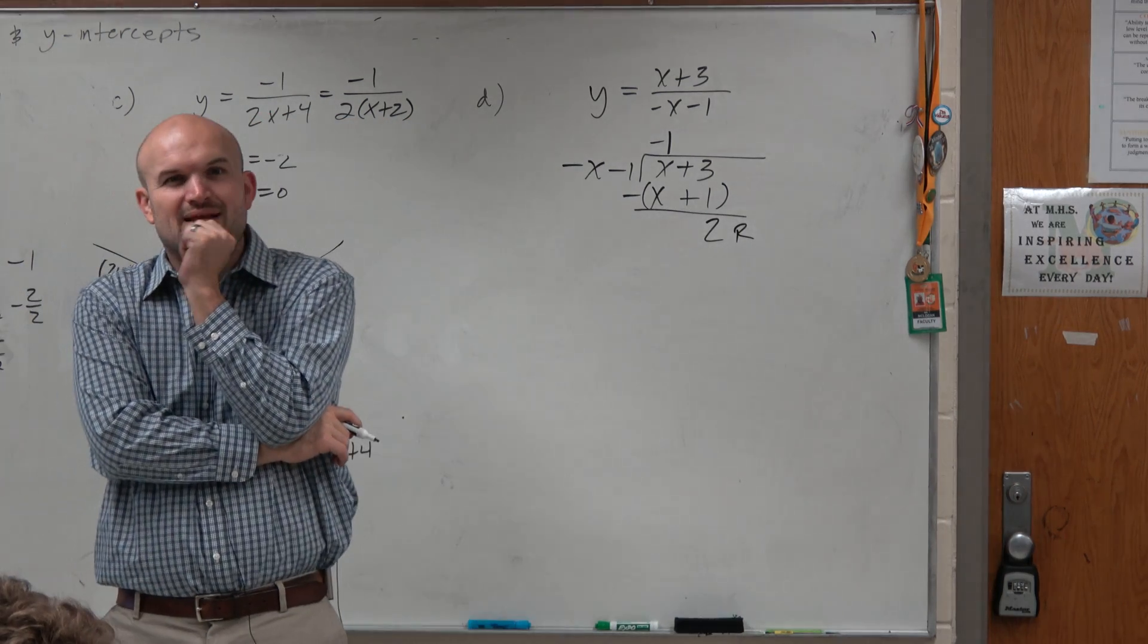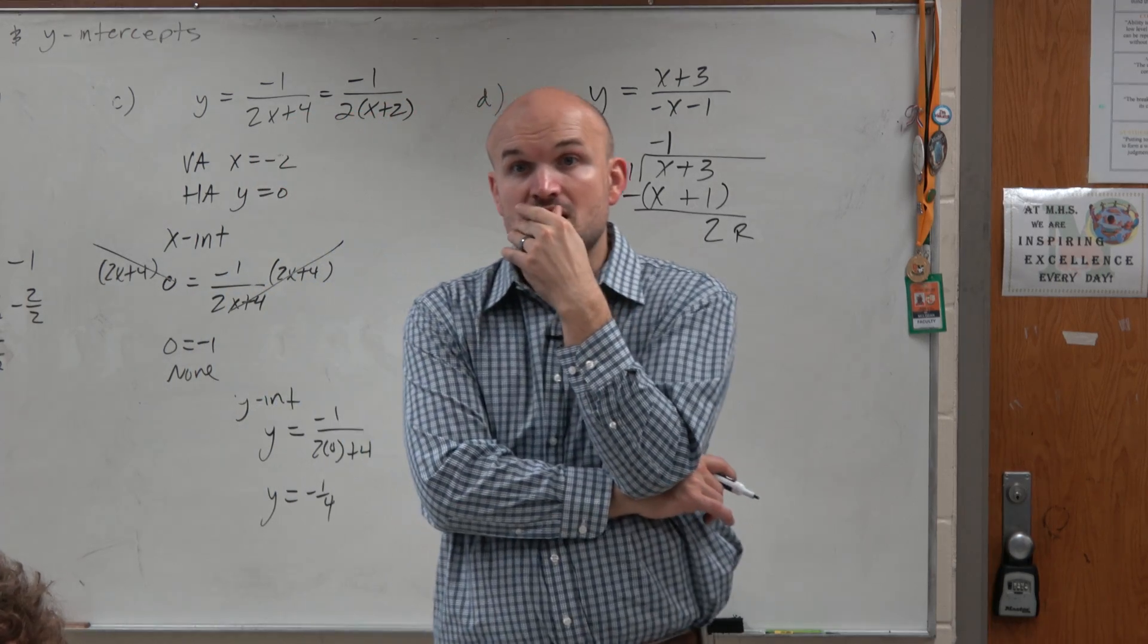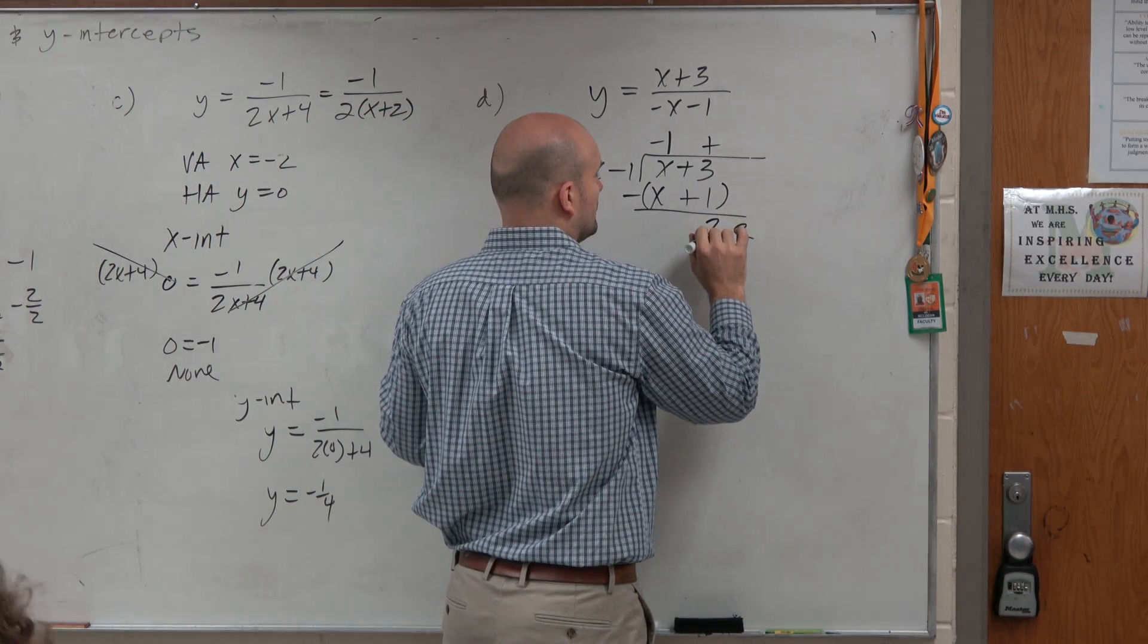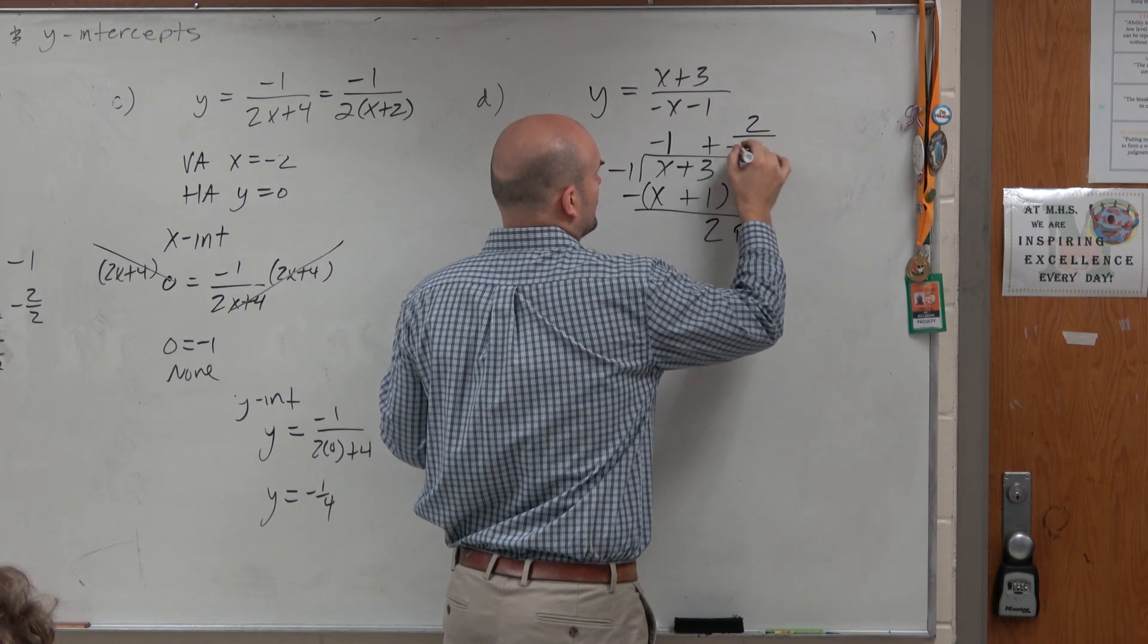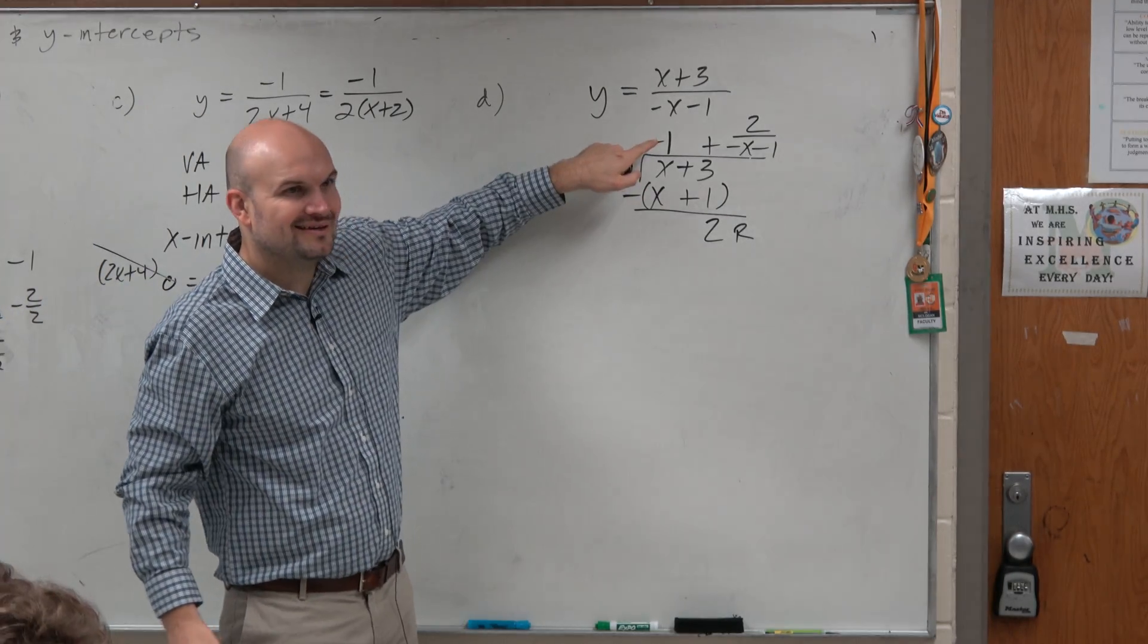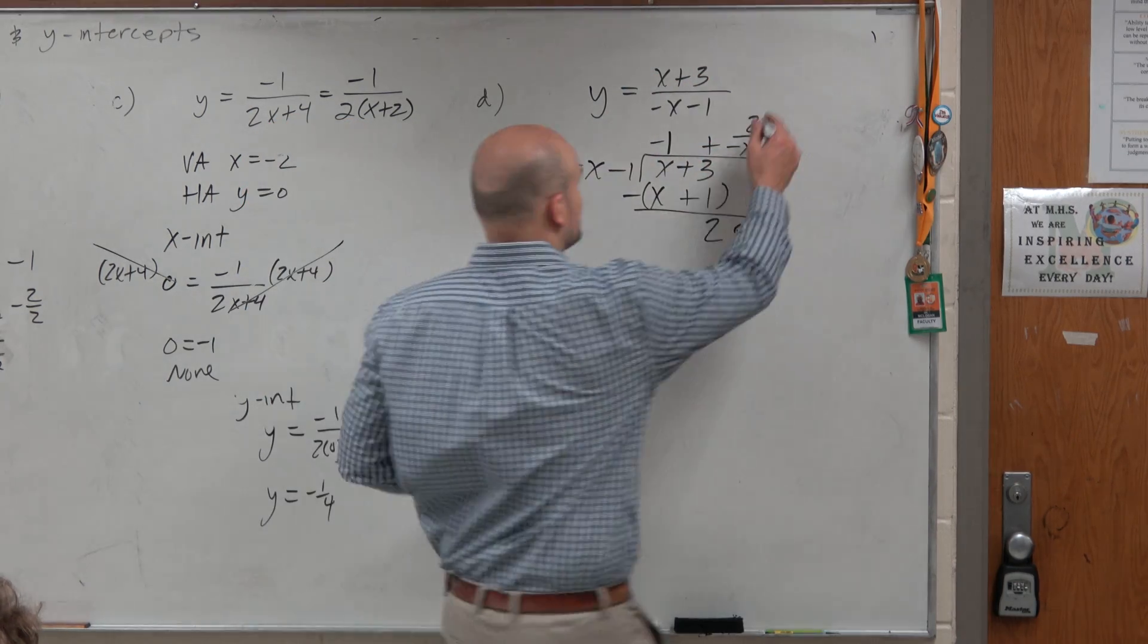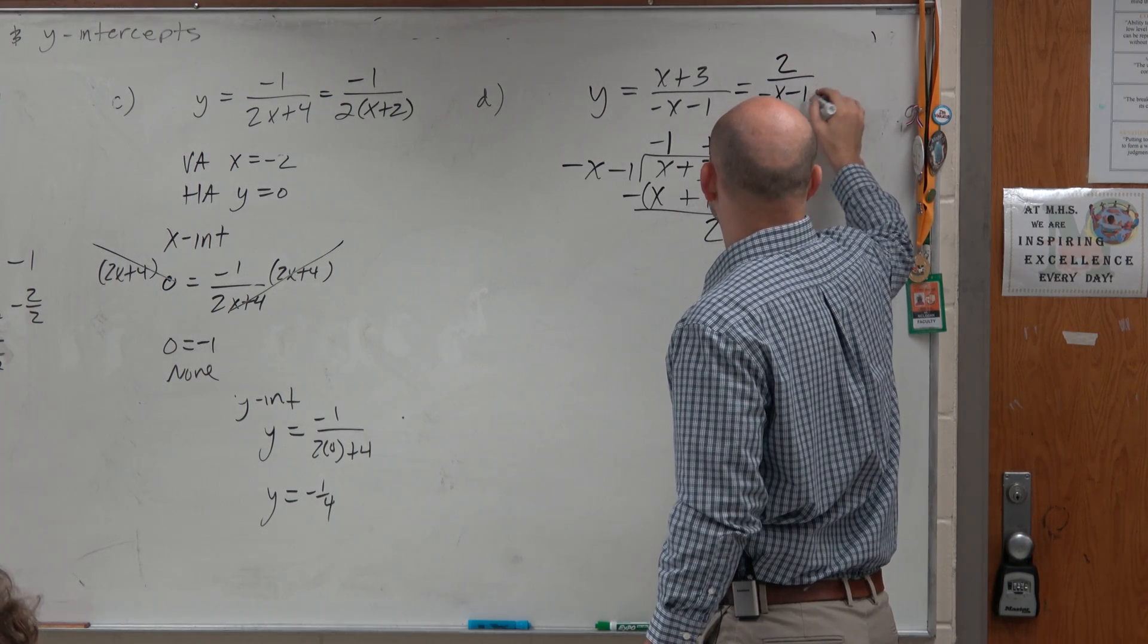Does anybody remember what we do with our remainder, if we were to write the answer fully? Yeah? Put it over negative x minus 1. You put it over your divisor. So this is plus 2 over negative x minus 1. And then I look at this, and I say, huh, does that kind of look similar to something that I've looked at? Because remember, this is the same as that, right? And then I look at this, and I say, well, you know what? If I just write this at the end, this looks like it's a reciprocal function.